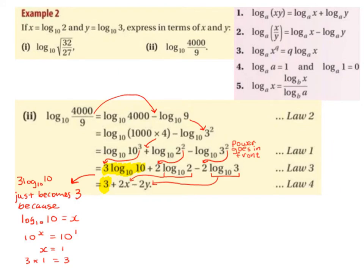Now we're going to work out log base 10 of 4000/9 in terms of x and y. The first thing we do is change the division to a minus, following Law 2 of logs: log base a of (x/y) equals log base a of x minus log base a of y. So log base 10 of 4000/9 becomes log base 10 of 4000 minus log base 10 of 9.